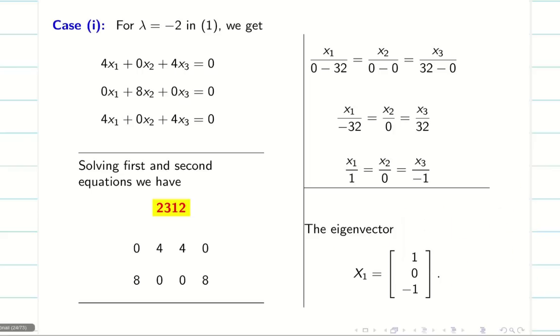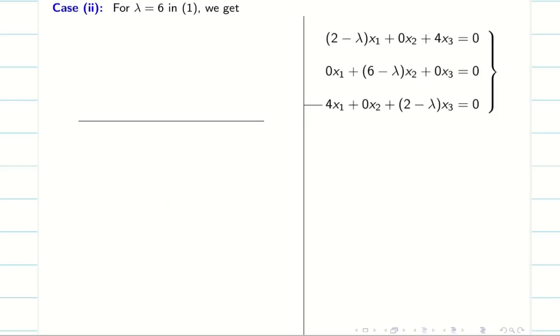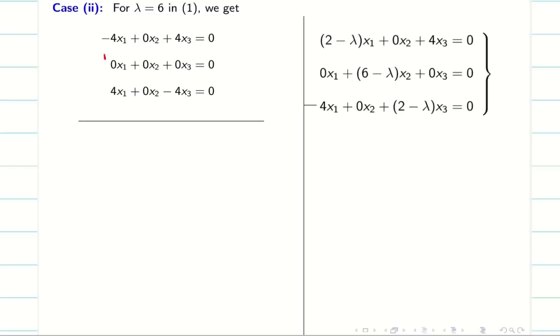Now let us go for the second eigenvector. When you put lambda equal to 6, we will be getting minus 4, 0, minus 4. Now you see this is very important. The second equation is completely 0. I cannot take it. And when we see my equation 1 and 3, they are exactly same. Only they differ by minus. So if you multiply a negative sign on both sides, equation 1 and 3 are same. So as we said in the repeated eigenvalues video, if two equations are same, we have to make some elements 0.